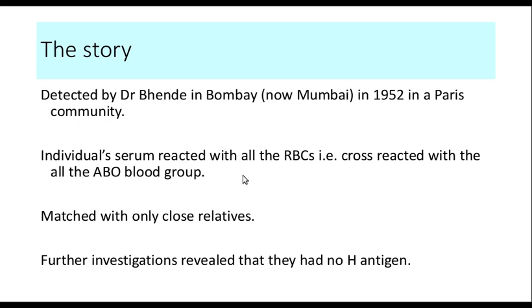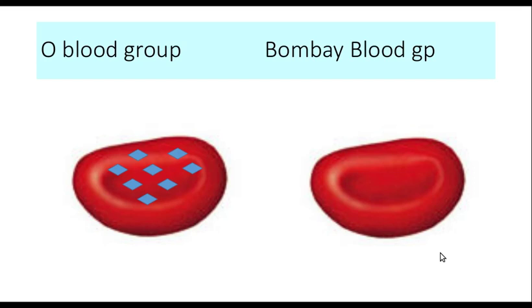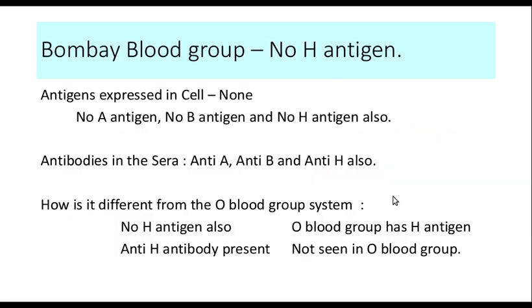Further investigations revealed that this person did not express even the H antigen. In the O blood group, there is the H antigen but no A and B antigen. In the Bombay blood group, we don't have the H antigen. So there is no substrate which can be acted upon to produce the A or the B antigen. In effect, these people do not have the H antigen, do not have the A antigen, or the B antigen. The antigens expressed on the cells of a Bombay blood group are none — they don't have the A antigen, B antigen, or H antigen.